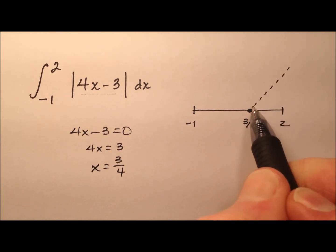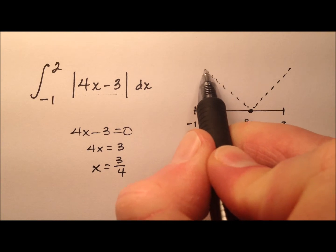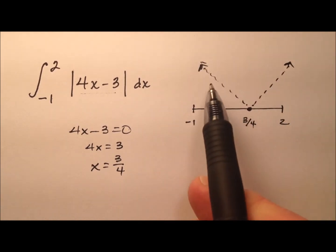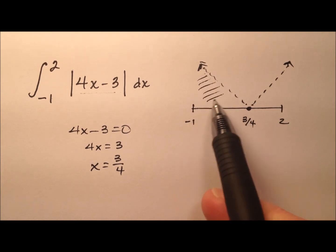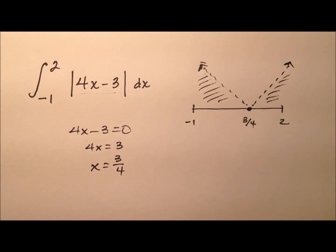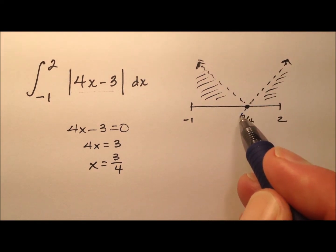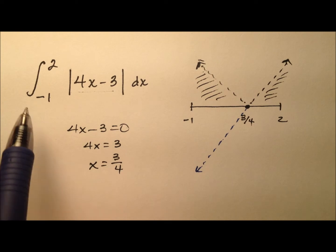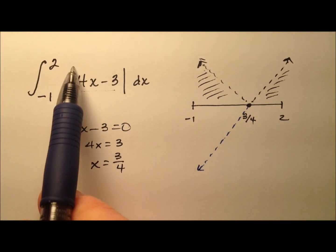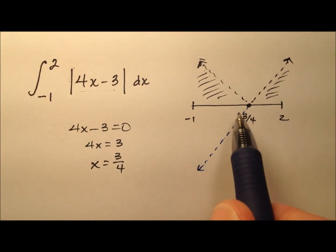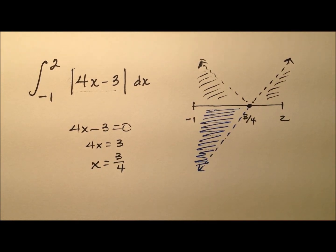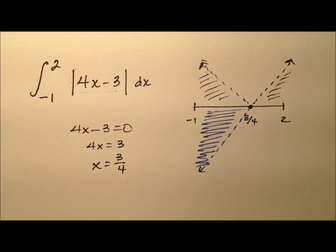So that v-shaped kind of looked like this. And of course, the area that we're trying to solve for is here and here. But before we took the absolute value, this was a line that extended down below the x-axis. So if we were to take this definite integral without regards to the absolute value, it would actually take this portion of the graph and make the area negative instead of positive.